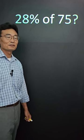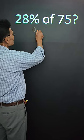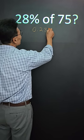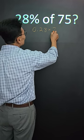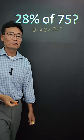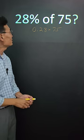To find 28% of 75, you would have to do 0.28 times 75. That's pretty difficult to do without a calculator.